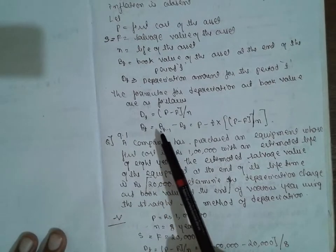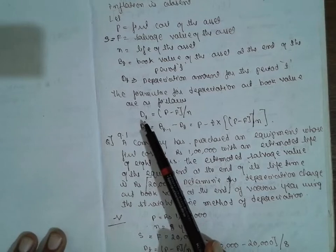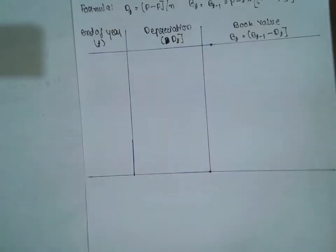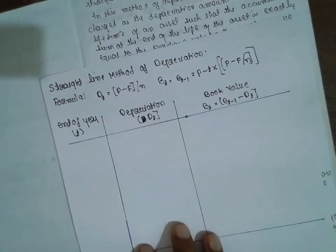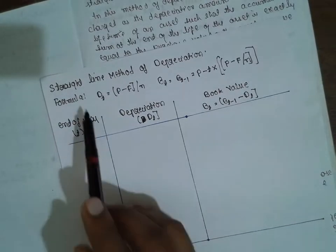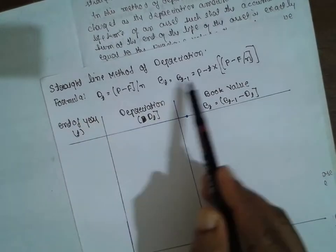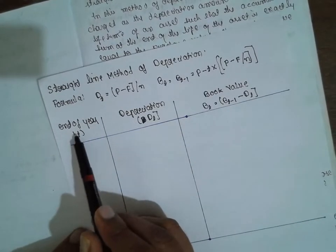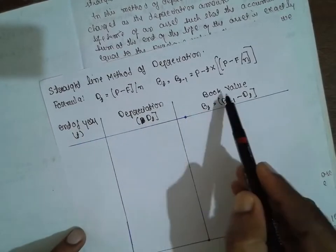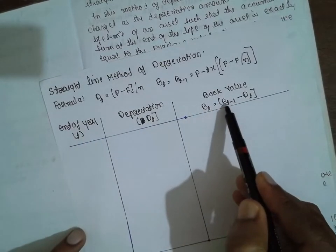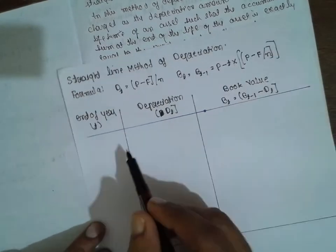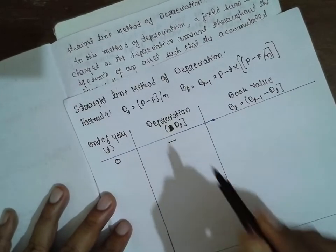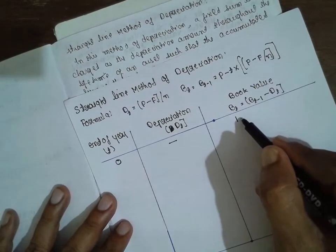Using the two formulas, we find the depreciation and book value. We set up a table with columns: end of year (T), depreciation (DT), and book value (BT = BT−1 − DT). At year 0, the depreciation amount is nil and the book value is 1 lakh, which is P.